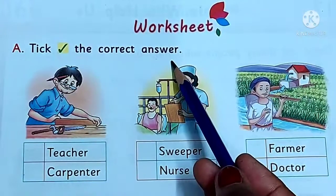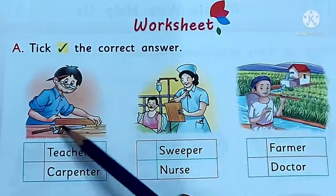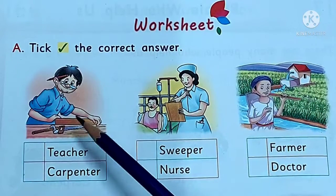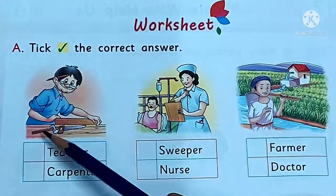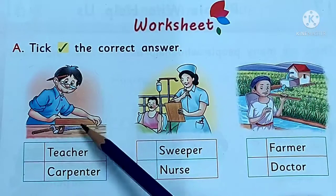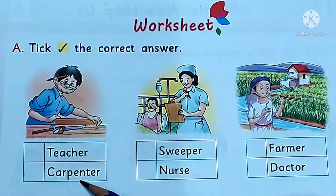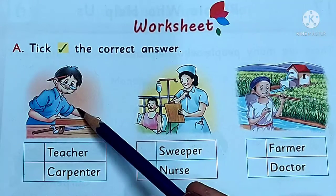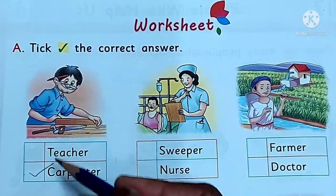Pick the correct answer. Students, a picture is given and you have to name the picture. See the first picture — who is he? Teacher or carpenter? He is a carpenter. Put a tick here.